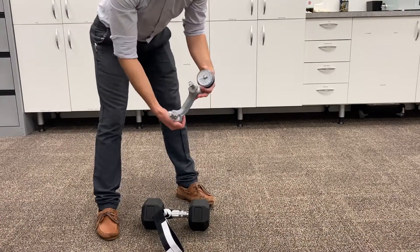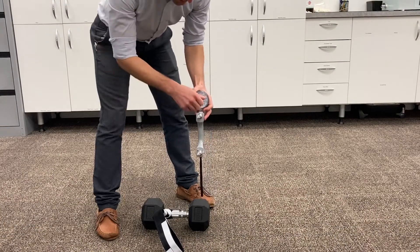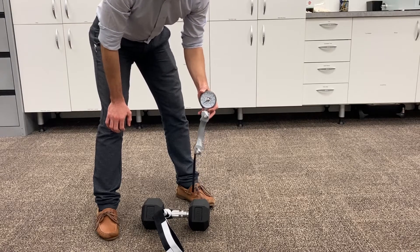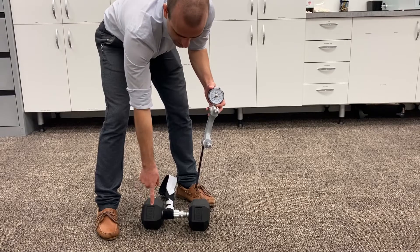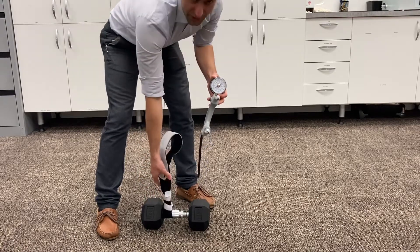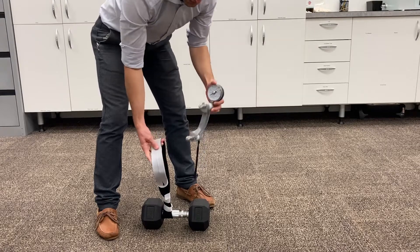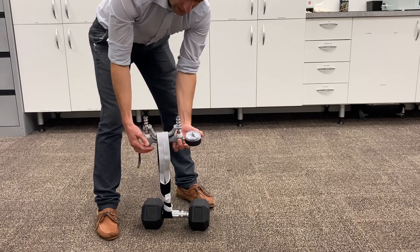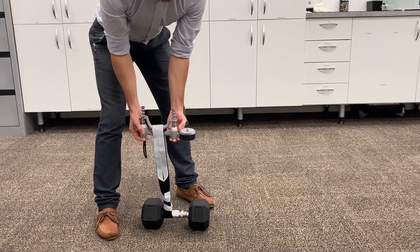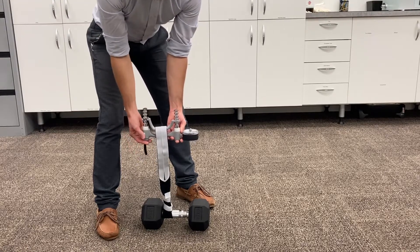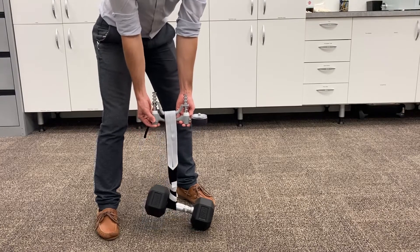We've got the handheld dynamometer here which is recording zero. We'll test it against a known weight, in this case it's a 10 kg dumbbell, and what we created was a loop that allows us to attach it to the weight as well as hook the handheld dynamometer on it. So we want to keep the two poles vertical and make sure that when we lift up the handheld dynamometer...